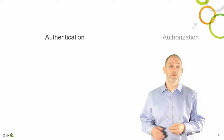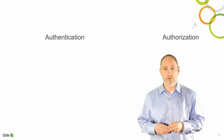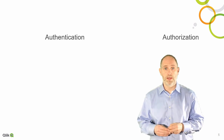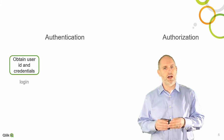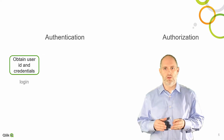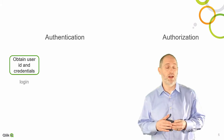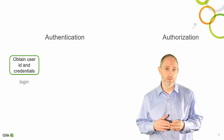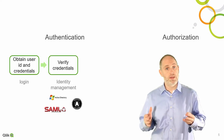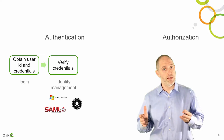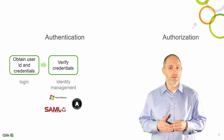What does the flow of authentication and authorization look like for Qlik Sense? The authentication process begins with the user logging into a form, computer, or some entity that collects user ID and password information. The information is sent to the identity management system and verified.